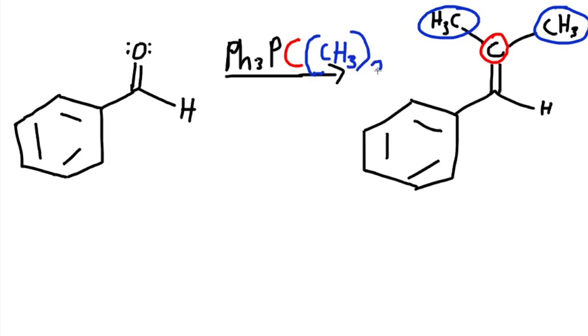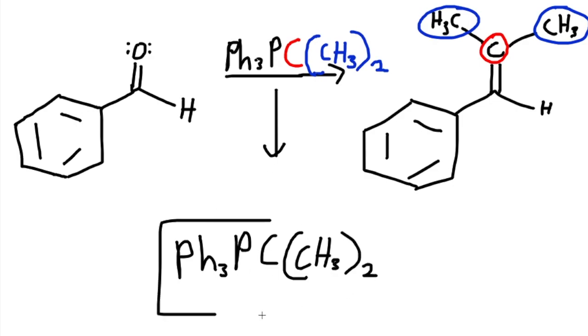So we put in parentheses CH3, parentheses, and two. Meaning we have two of them. So without the color, I'm just rewriting it so you guys can see it perfectly. pH3P, C, CH3, and two on the outside. So this is how the Wittig reagent is used.